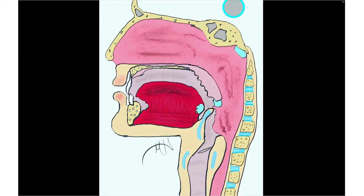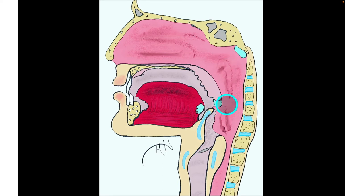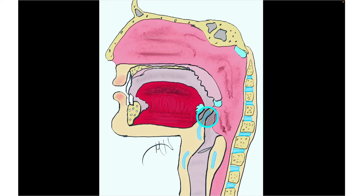To summarize, the conducting division includes the nasal cavity, nasopharynx, oropharynx, laryngopharynx, larynx, and then the trachea. Let's take a closer look at the larynx.